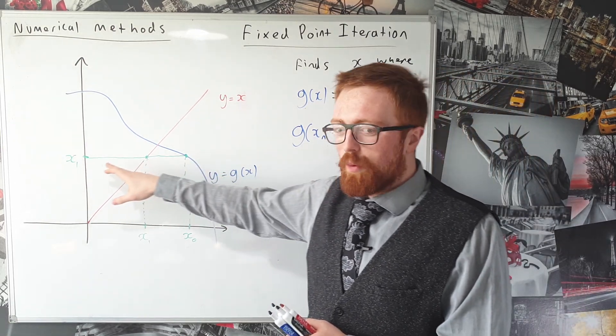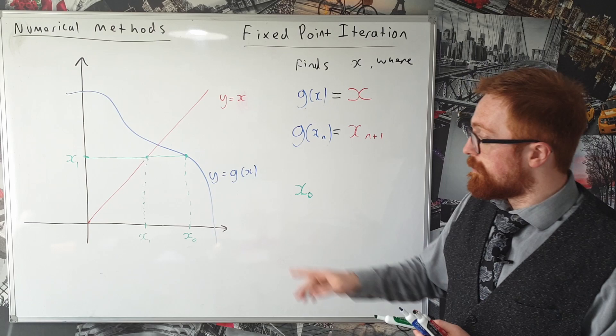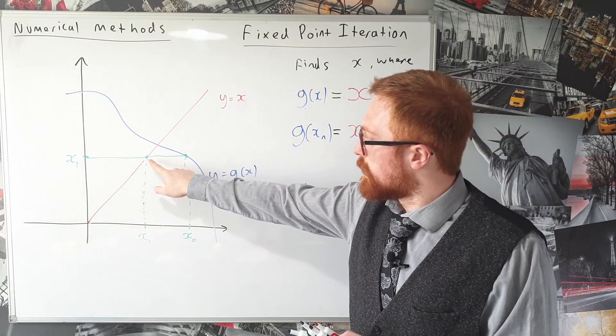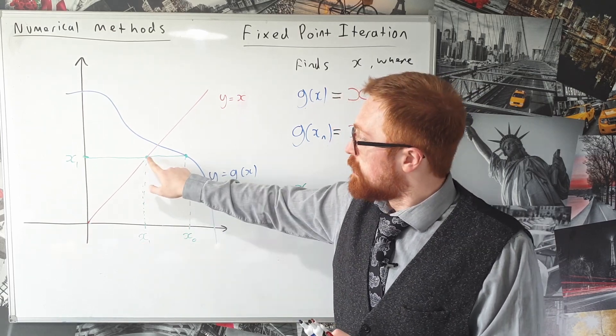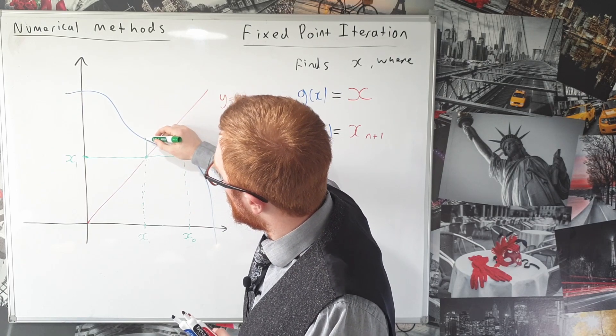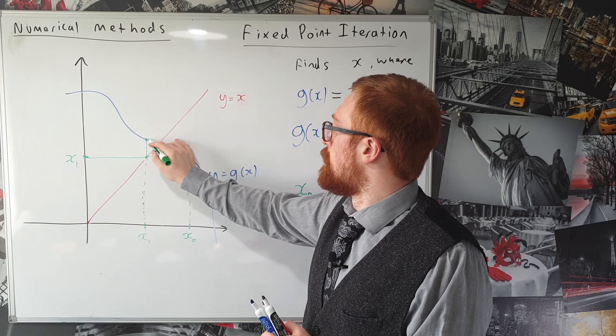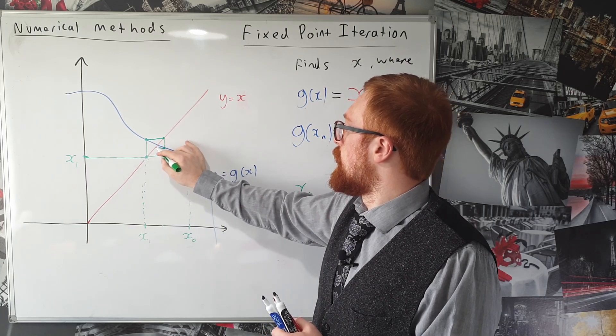So we don't actually need to go all the way to the y axis and then back down to the x axis every single time. If we go from our blue curve straight across to the line y equals x that tells us what our next x value x_1 is which means we can go straight up from there back to the blue curve. And then we can do the same thing over and over again going from the blue curve, going from our function to the line y equals x and back again.